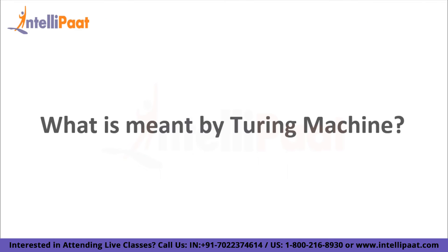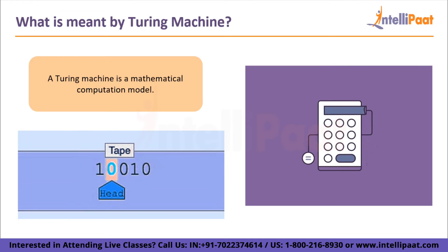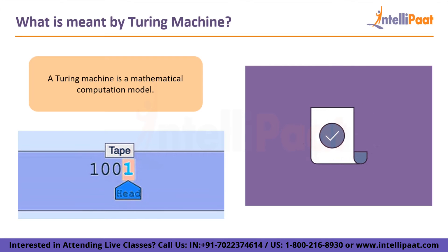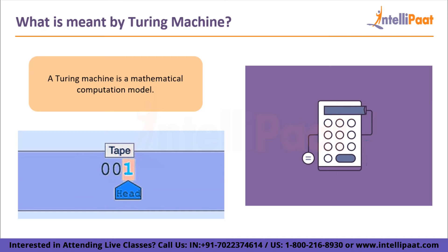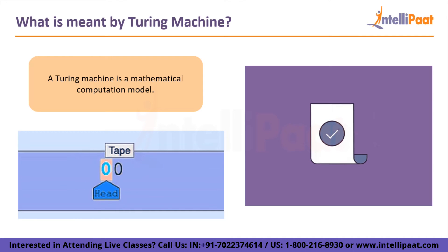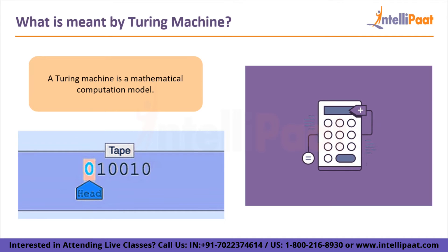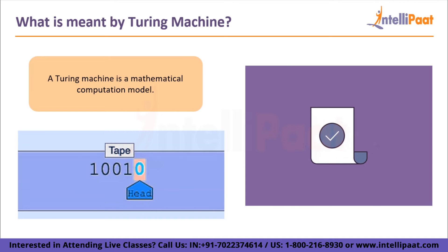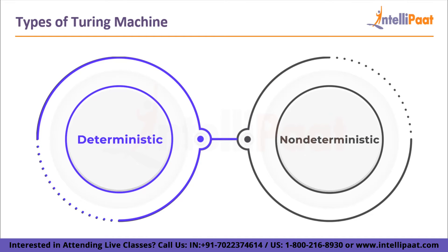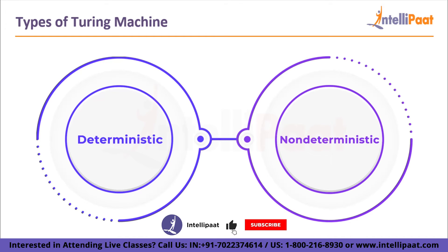So first let's see what is a Turing machine. A Turing machine is a mathematical computational model that provides an abstract machine that manipulates symbols on a strip of tape using a set of rules. A Turing machine is again of two types: deterministic and non-deterministic.